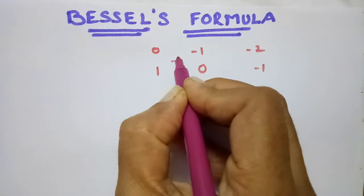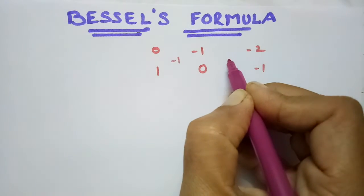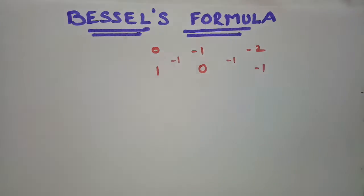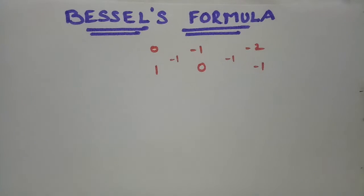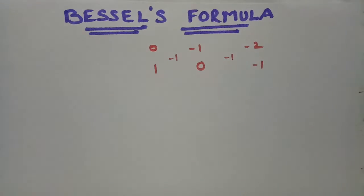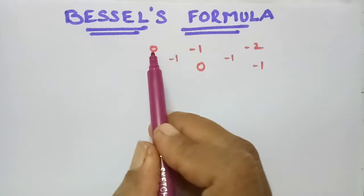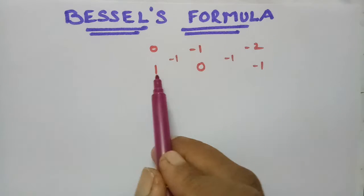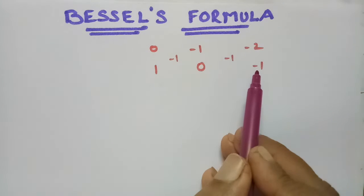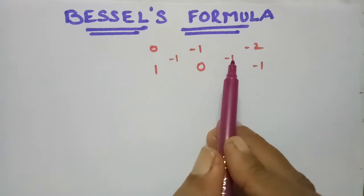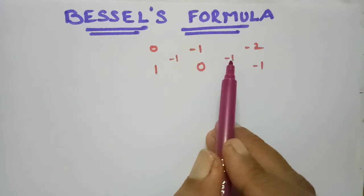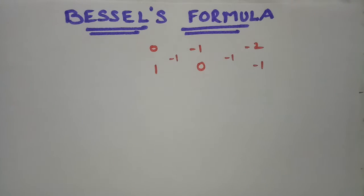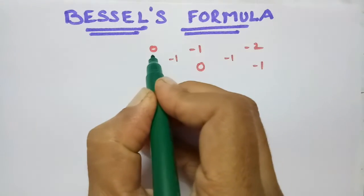In between I am writing minus 1. So use this simple trick: this is 0, minus 1, minus 2, and this is 1, 0, minus 1, and in between I wrote minus 2. So this is the bisection method.